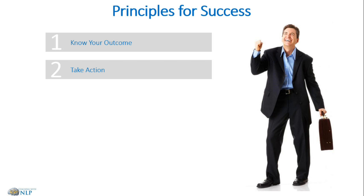Once we know our outcome, we need to take action — massive action. It's quite simple, yet so many people sit around pondering what they should be doing next, never actually doing what it takes to get where they want to be. If you want to change your career, take action — start looking for another job. If you want to save a relationship, speak to your partner. Sitting around and not taking action is how people wake up and realize their lives have passed them by — should have, could have, would have.